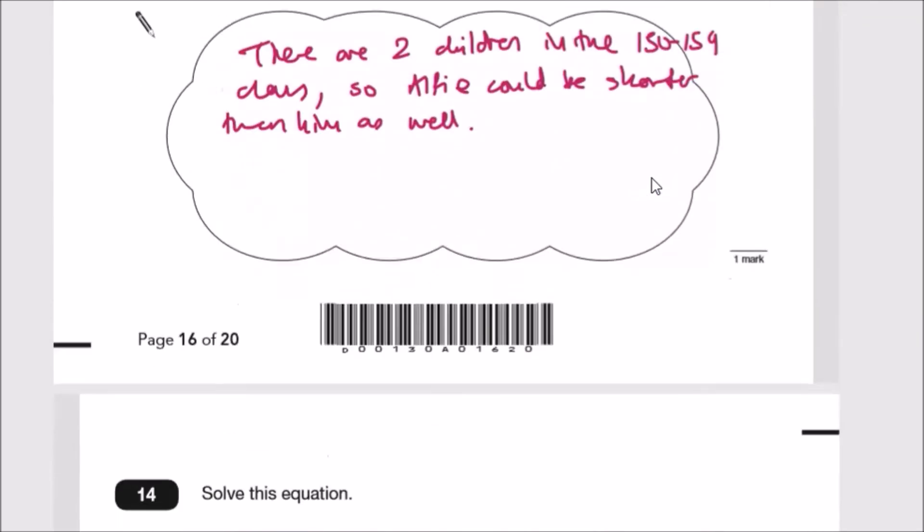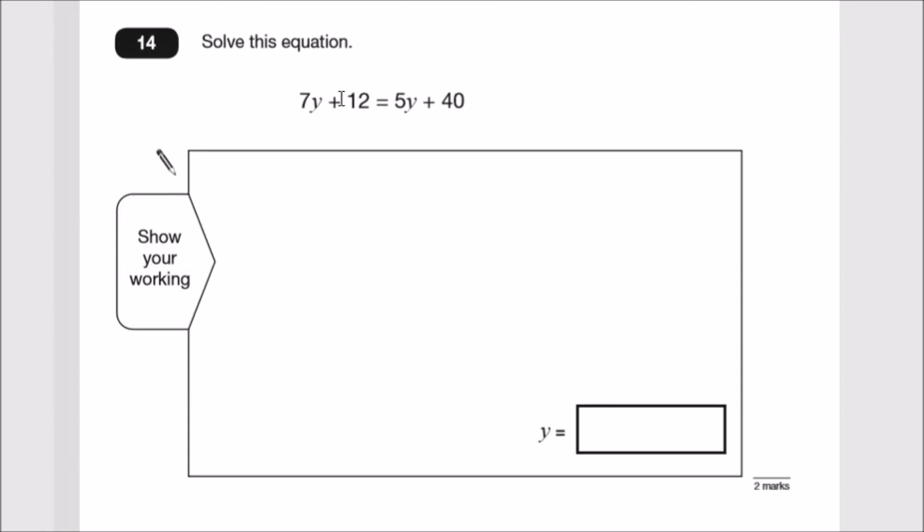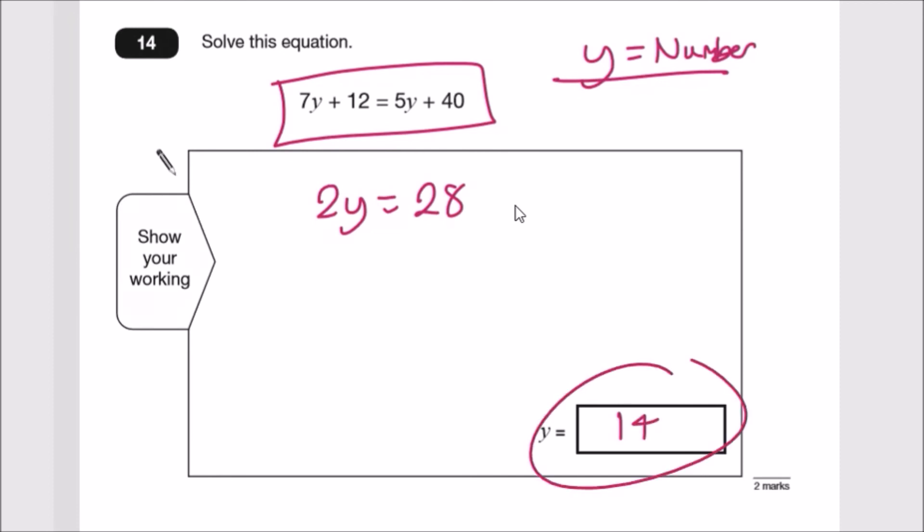Finally, to wrap this up, this is the easiest final question ever. Solve this two-problem equation. Equations on both sides: the objective is to make y equals a number. We have 7y on the left and 5y on the right. When I throw 5y across, it becomes -5y, so 7y minus 5y is 2y. When I throw plus 12 across, it becomes minus 12, so 40 minus 12 is 28. To find y, we just half it. Two lots of y, we want one y, so it's 14. So y equals 14.